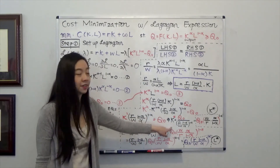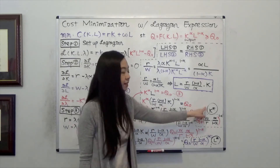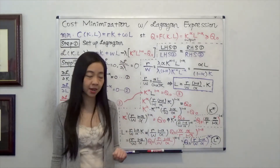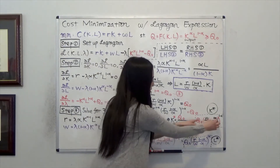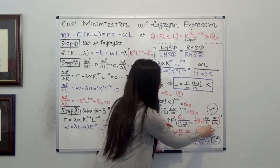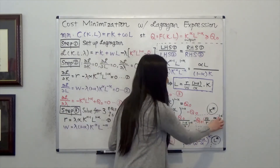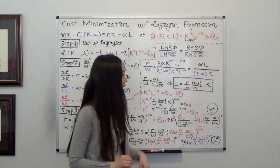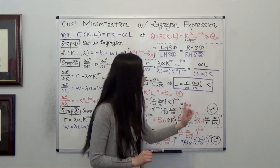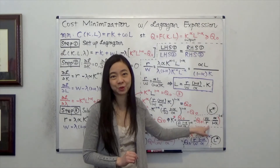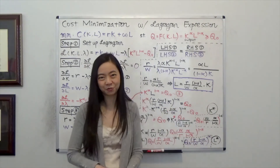After some calculation, you'll find that K star — the optimal amount of capital — is equal to Q0 times the bracket W over R times alpha over (1 minus alpha), all to the power of 1 minus alpha. You can see the demand for capital is decreasing in the price of capital R, so the demand for capital follows the law of demand.